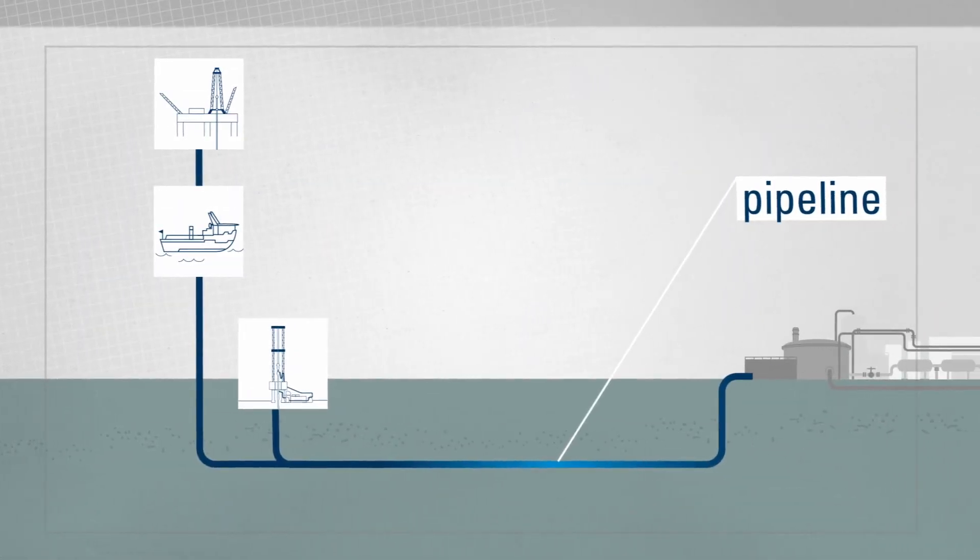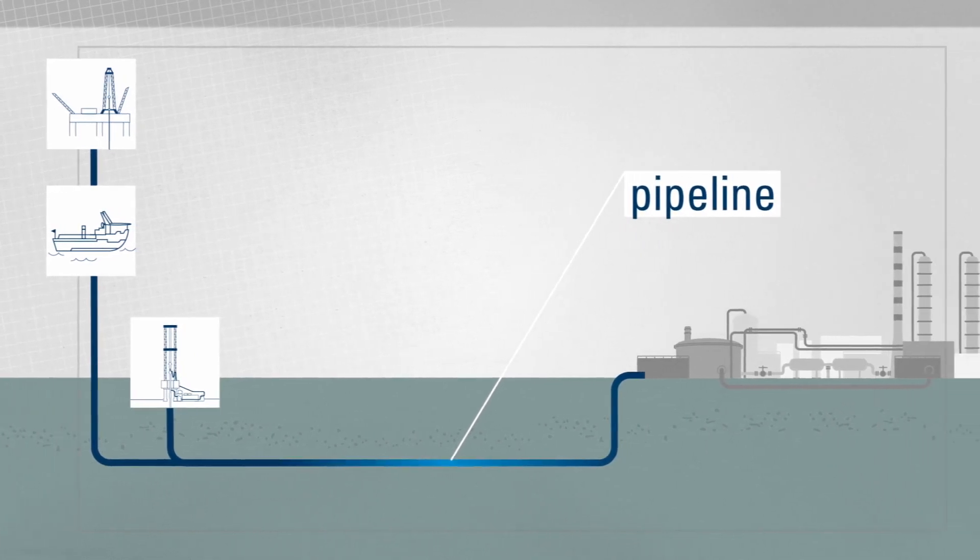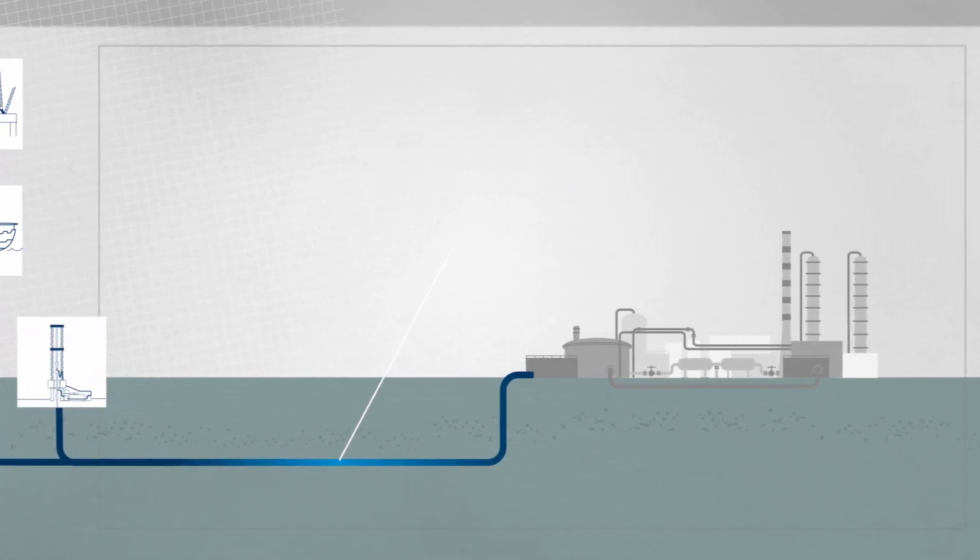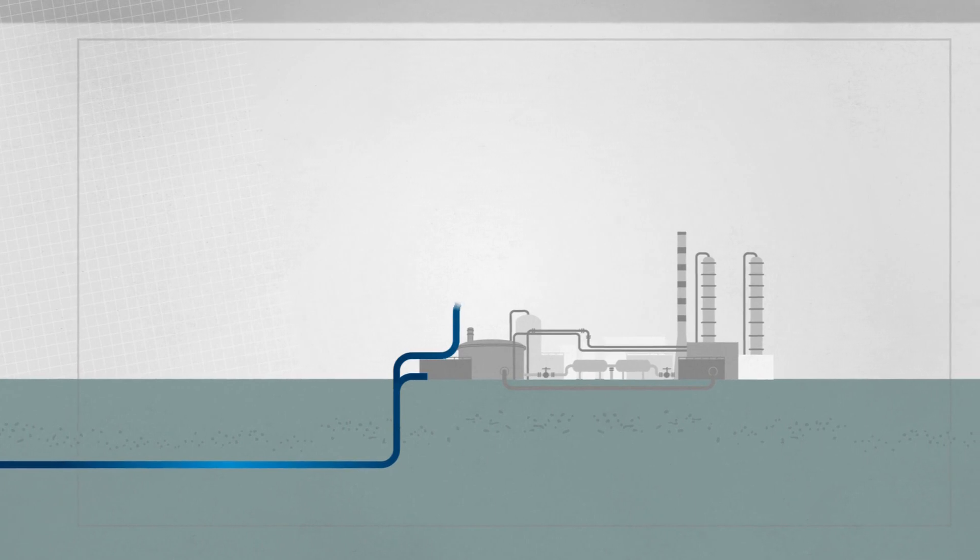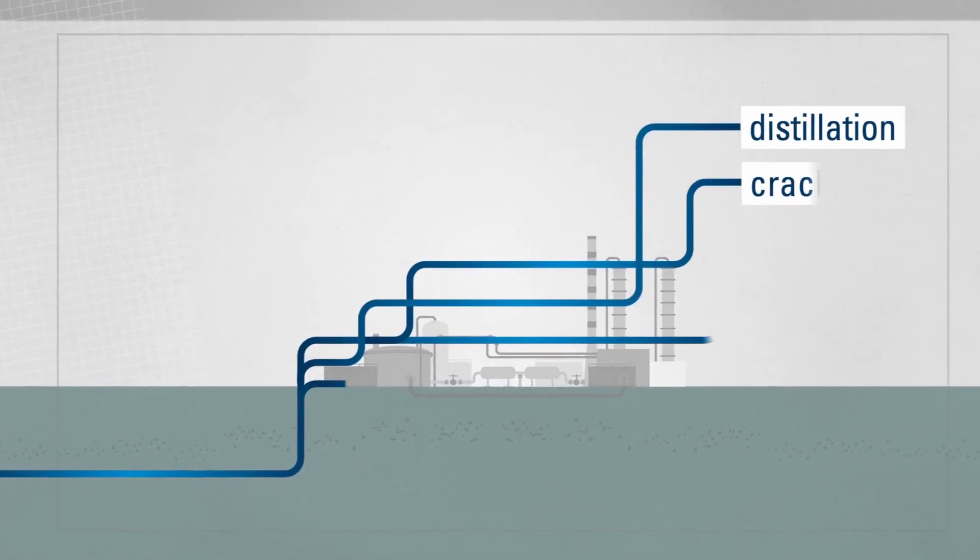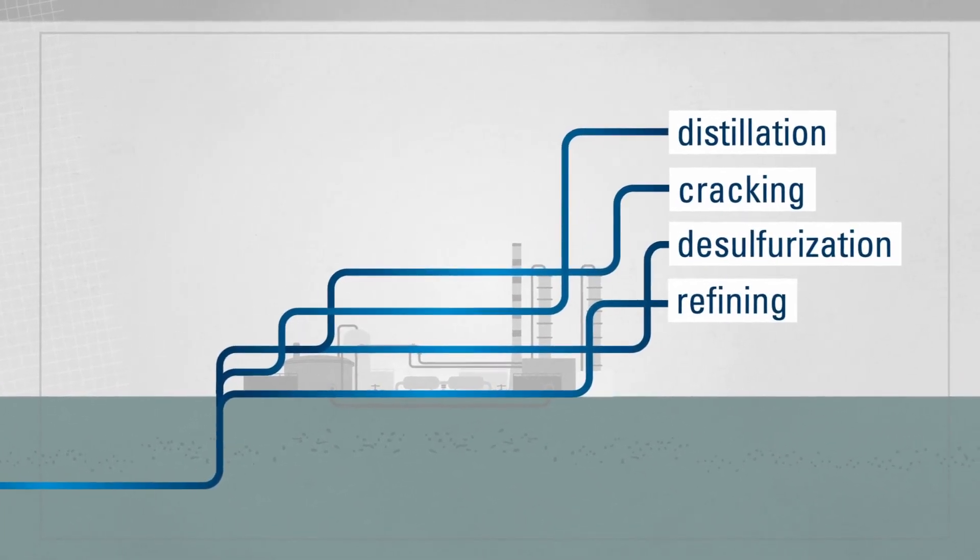The crude comes via a pipeline. To be able to use it in everyday applications, it has to be processed. There are different methods depending on the end product: distillation, cracking, desulfurization, and refining.